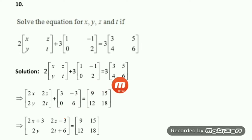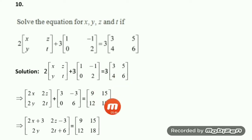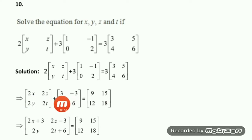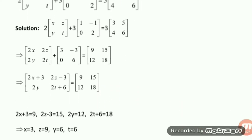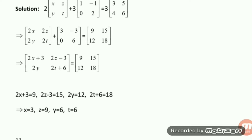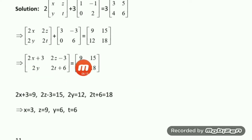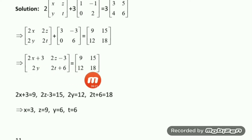On the right side also do scalar multiplication: 3×3 is 9, 3×5 is 15, 3×4 is 12, and 3×6 is 18. Now convert to a single matrix by adding corresponding elements: 2X+3, 2Z-3, 2Y+0 (so just 2Y), and 2T+6 equal to the right hand side. Comparing both sides: 2X+3=9, 2Z-3=15, 2Y=12, 2T+6=18.